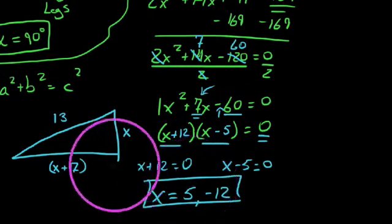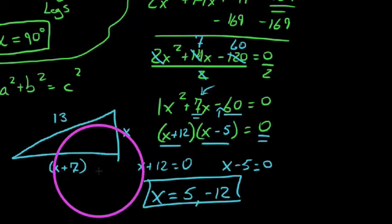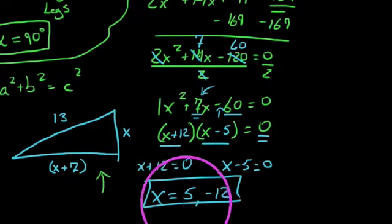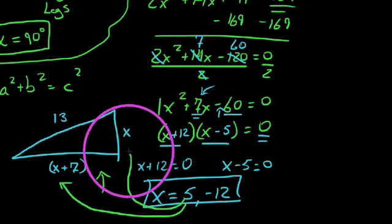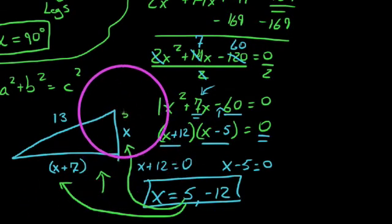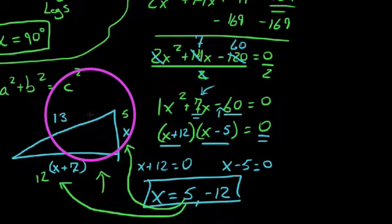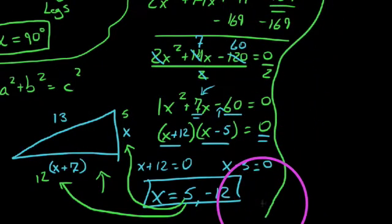But you look at both of these answers, and you can plug them back in and check them in the Pythagorean theorem, and they both check out. But when you look at the primary example here, we see that positive 5 is really the only reasonable answer. And you'll notice that when you plug 5 in, you get a 5, 5 plus 7 is 12, and 13, which we know is one of our Pythagorean triples: 5, 12, 13.